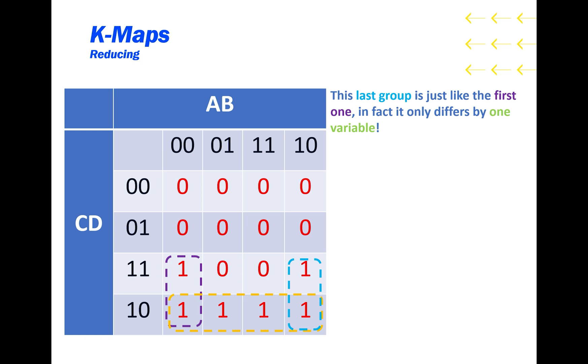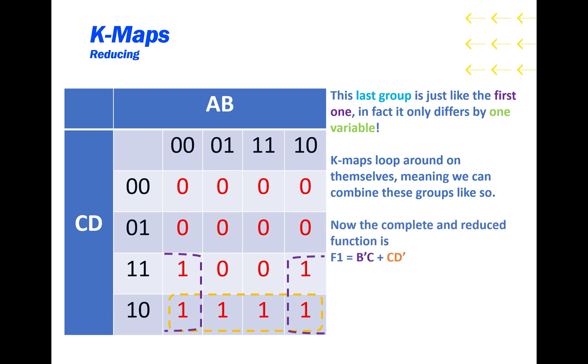This last group is just like the first one. In fact, it only differs by one variable. K-maps loop around on themselves, meaning we can combine the first and the last group like so. Now the complete and reduced function is B'C or CD'.